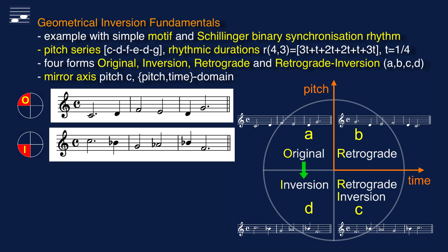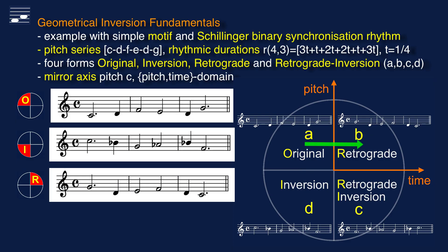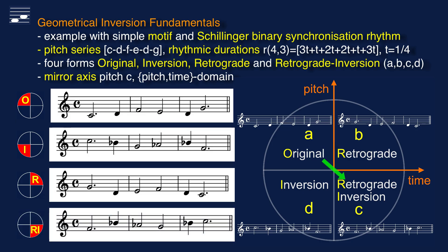So here is the inversion form. The retrograde form similarly corresponds to a mirroring operation in the time domain — the time reversal of the motif. When mirroring in both domains we obtain the retrograde inversion form. Note that the order of operations is relevant: first we determine the inversion form, then apply the time domain reversal.